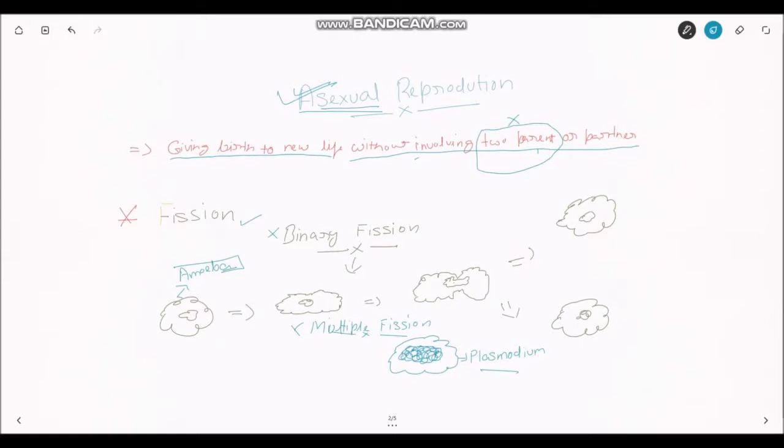Now in asexual reproduction there are many types. First is fission, and we will cover each of them one by one. In fission there are two types: binary fission and multiple fission.